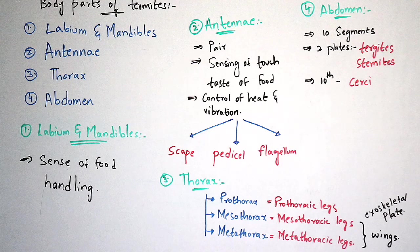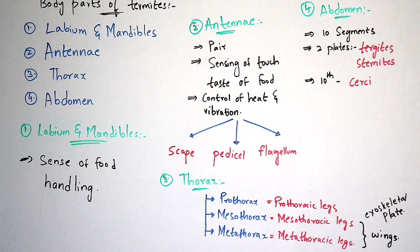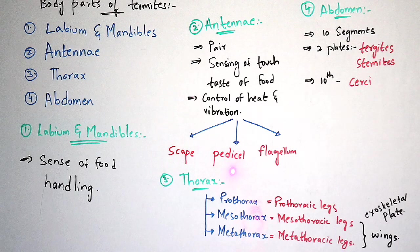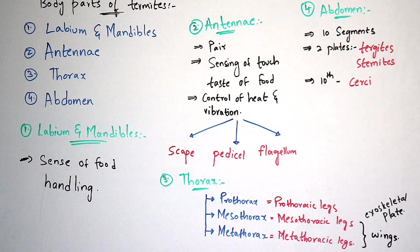Coming to the antennae: there are a pair of antennae present at the head region of the termites — they are long structures. The main function of the antennae is sensing of touch and taste of food, and also controlling heat and vibration. Normally the antennae are divided into three parts: scape, pedicel and flagellum. Among these three, pedicel is very small. The scape is located at the first end point (initial point), flagellum is at the end point, and the pedicel is located in the middle and is very short.